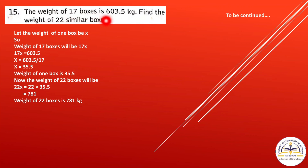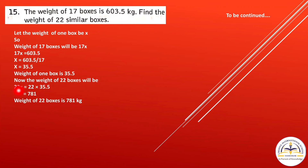Question 15: The weight of 17 boxes is 603.5 kilograms. Find the weight of 22 similar boxes. Let the weight of one box be x, so 17x equals 603.5. Dividing: x equals 603.5 divided by 17 equals 35.5 kilograms. For 22 boxes: 22 times 35.5 equals 781 kilograms.